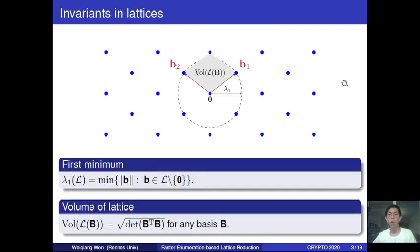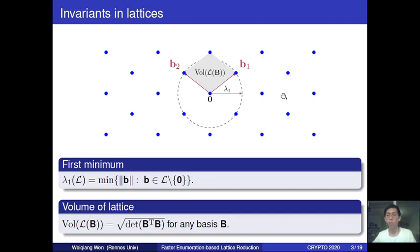There are also two important invariants in lattices: the first minimum, which denotes the norm of the shortest non-zero vector in the lattice, and also the volume of the lattice, which can be computed as the determinant of any basis of the lattice.